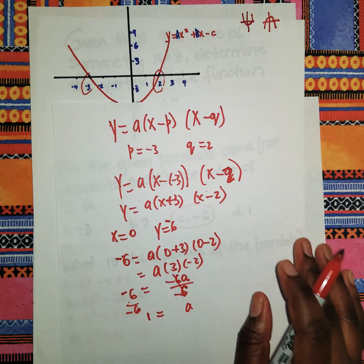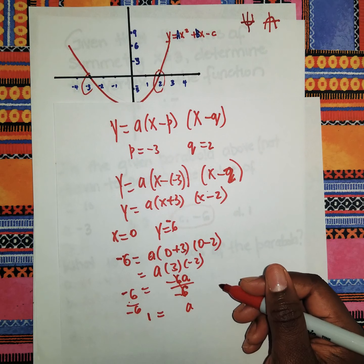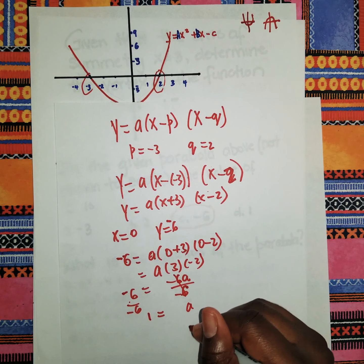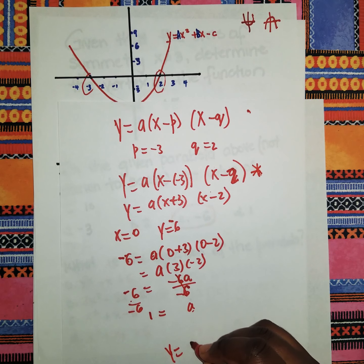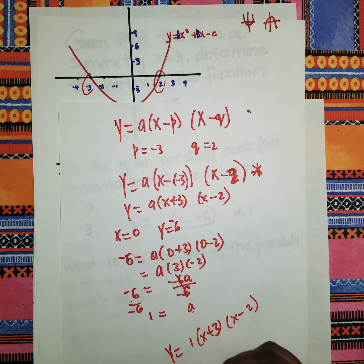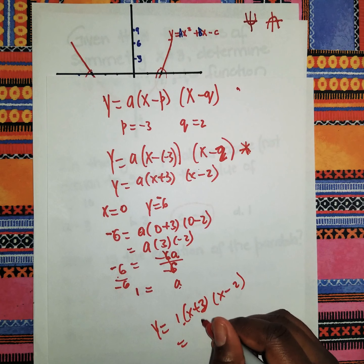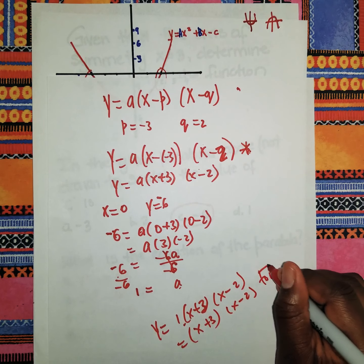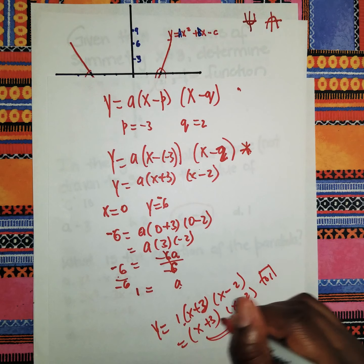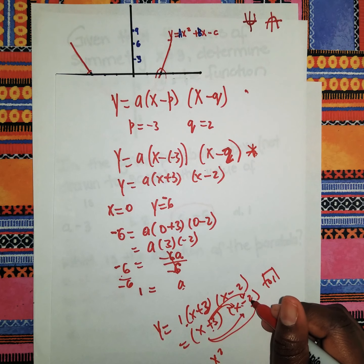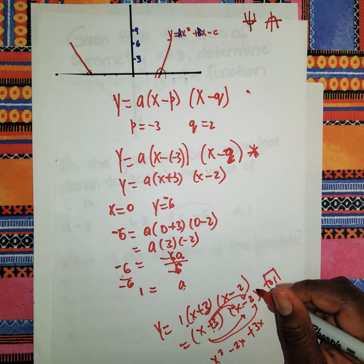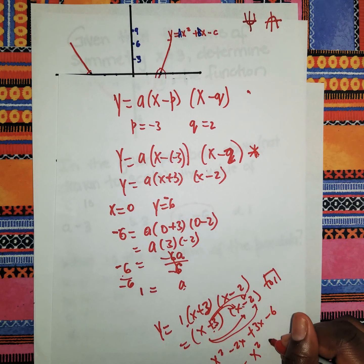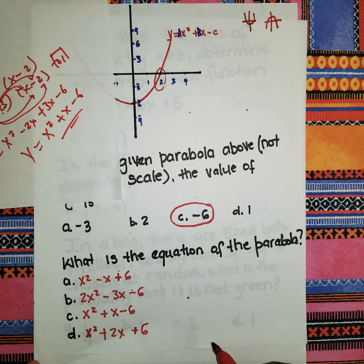Now we can find the equation in the form y = ax² + bx − c. Substituting a = 1: y = 1·(x + 3)(x − 2). Using the FOIL method — first, outer, inner, last — we get x², then −2x, then +3x, then −6. So y = x² + x − 6, and that's our answer.